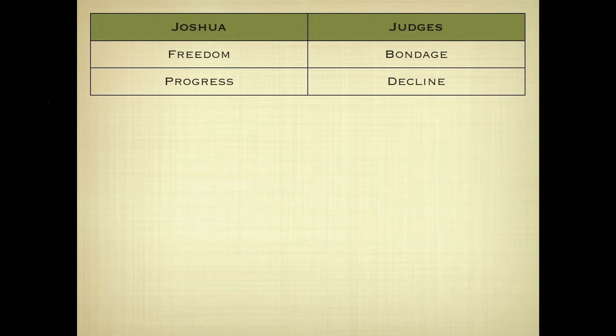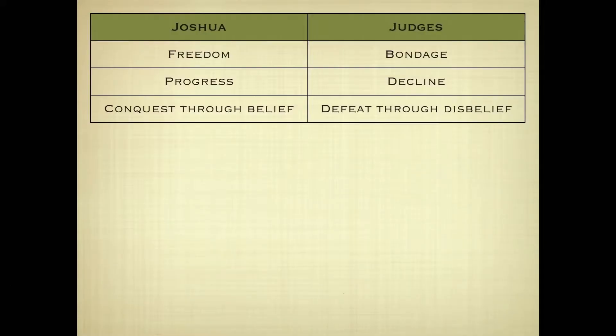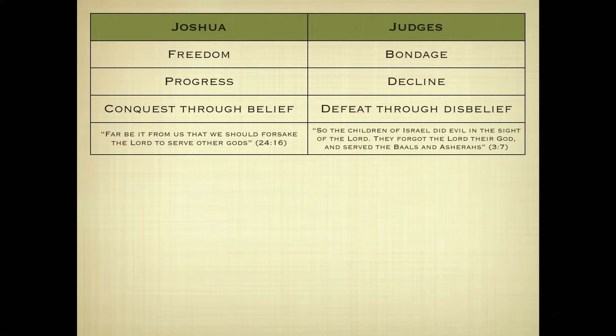There is an interesting contrast between the Book of Joshua and the Book of Judges. Joshua describes Israel experiencing the freedom of entering into the promised land, while Judges records its subsequent bondage in the promised land — geographical progress in Joshua versus decline in Judges. In Joshua, Israel's conquest came through belief in God; in Judges, their defeat came through disbelief. It always comes down to their relationship with the living God and whether they're going to trust him or not.